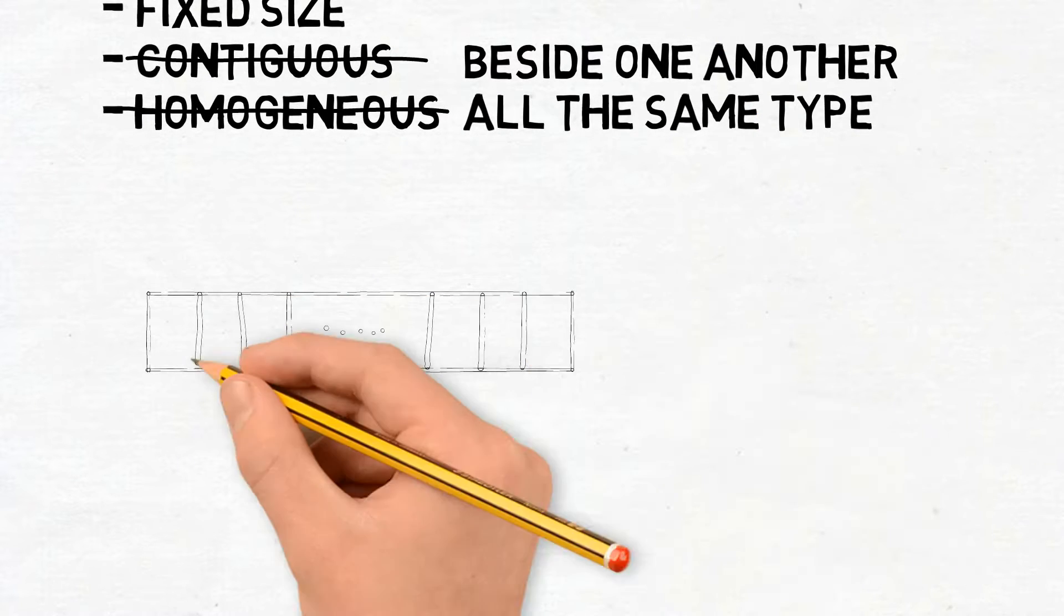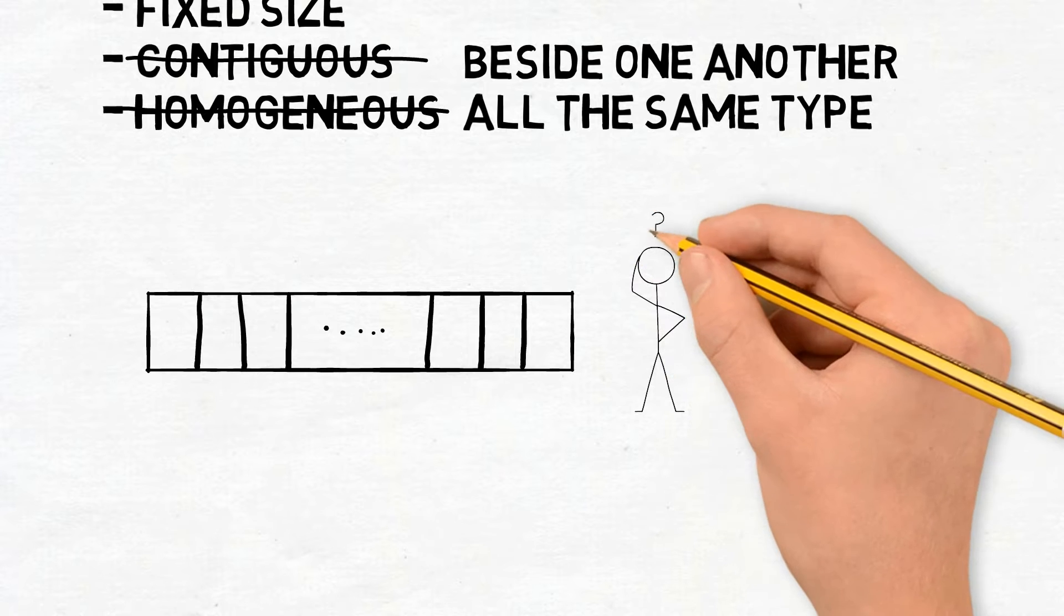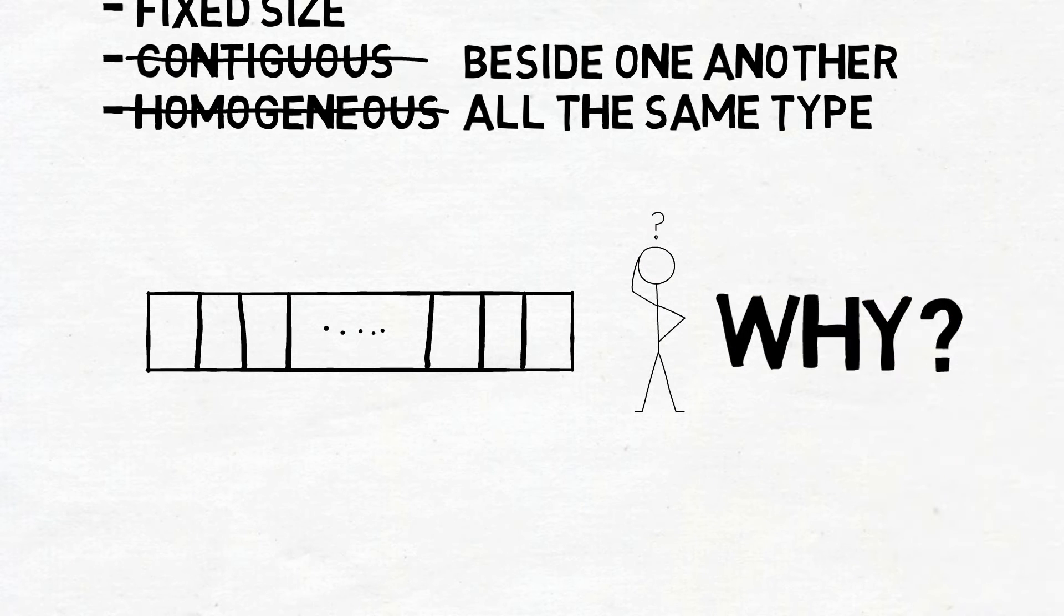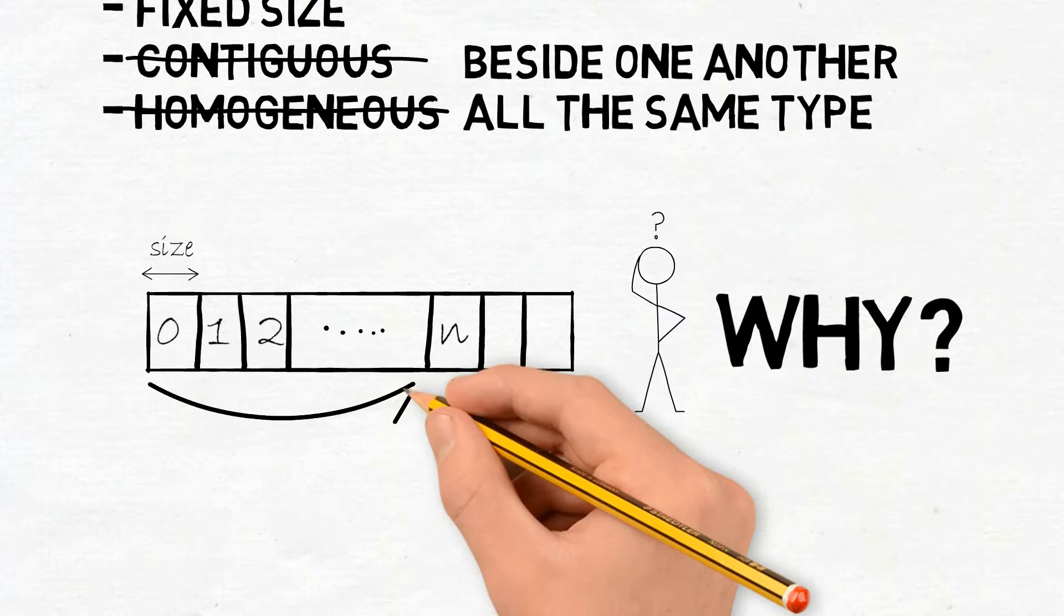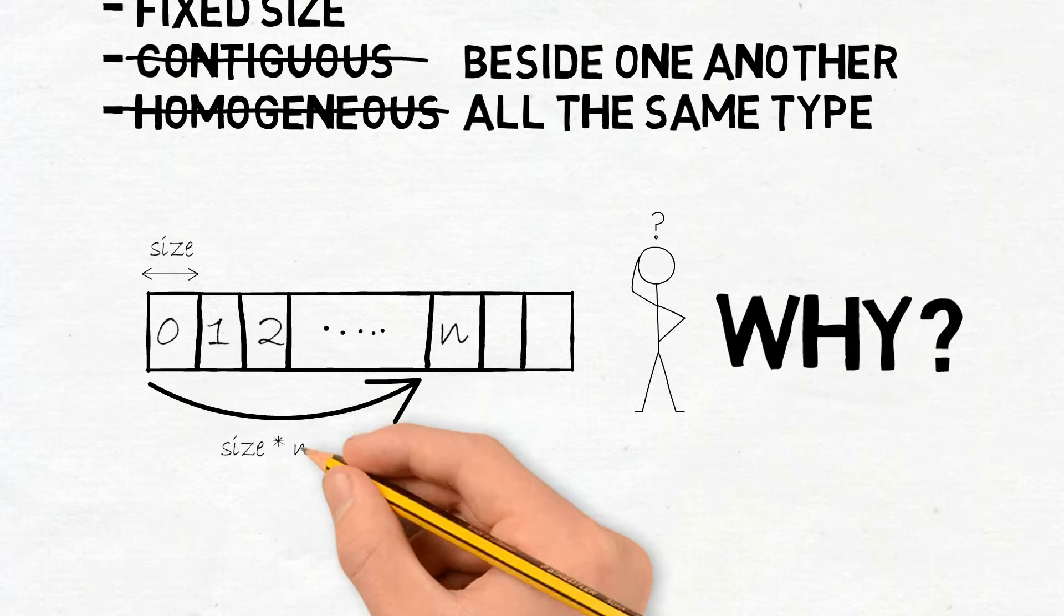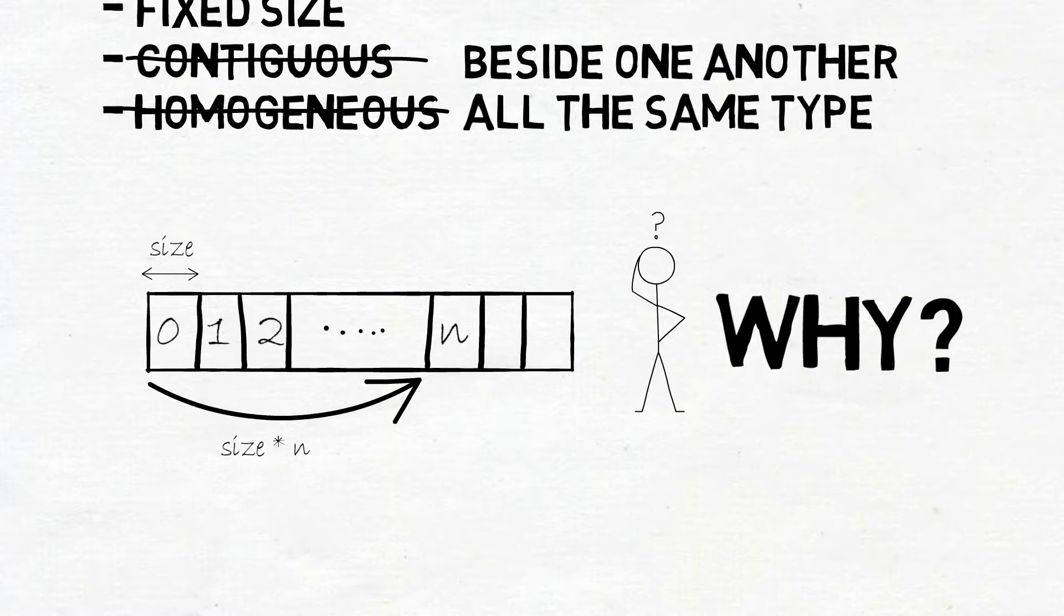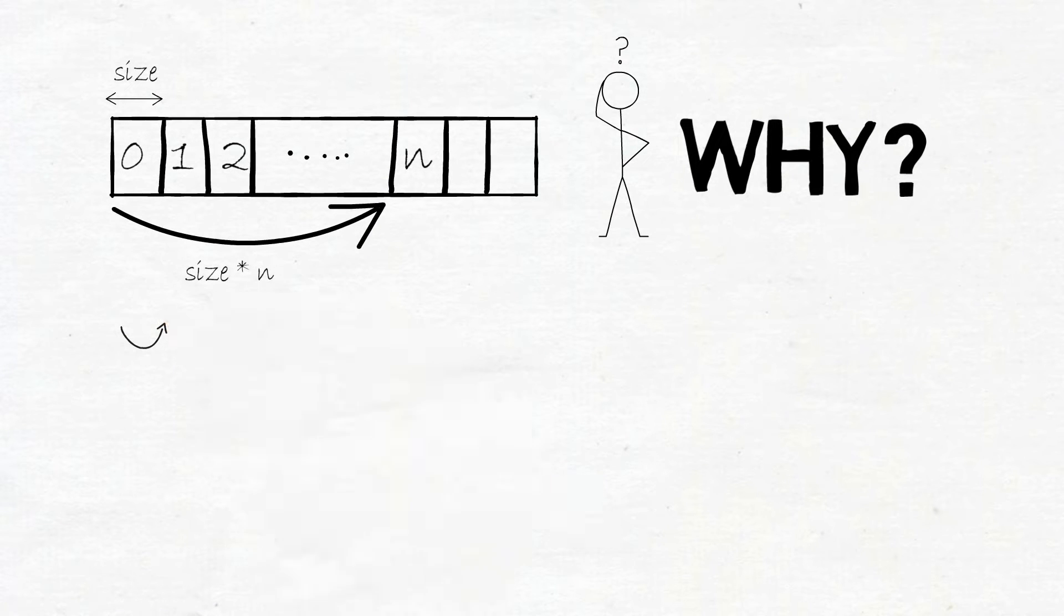And why would we choose this data structure? Why would we not use a linked list or a normal list or a map? They're really good at random access by index. It's super easy because you just take the size of one of the elements, they're all the same, and you multiply it by the index, and there you go, you're at the memory location that you want.